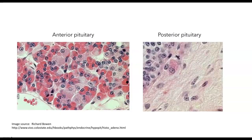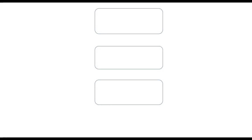This is an even higher magnification image, again reinforcing the idea that the anterior pituitary has many cell bodies, whereas the posterior pituitary is mainly nerve endings. Up to this point, I've been talking about the hypothalamic-pituitary axis and stressing how the nervous system and the hypothalamus can influence the endocrine system.